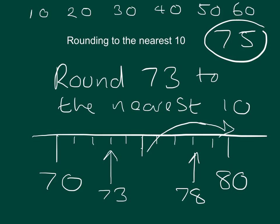And in the same way, 85 to the nearest 10 would be 90. So that's rounding to the nearest 10.